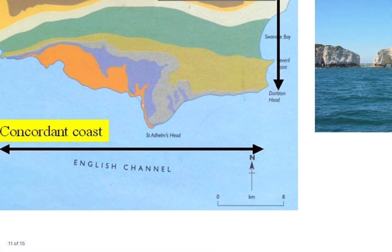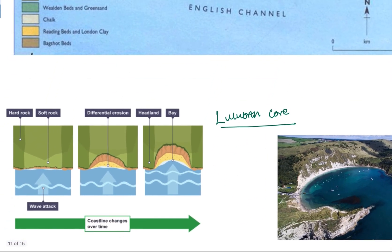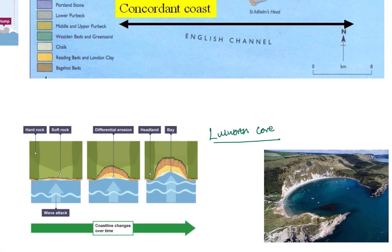We can then start to move further back down the coast and look at the other processes and landforms occurring here. Further along the coast we have Lulworth Cove. With Lulworth Cove, it's important to remember that our coastline here is concordant — this means that the rock types lie parallel to the coast. The sea has broken through the narrow strip of hard Portland limestone and has been able to erode the softer Wealden clays behind. They've been able to erode the clays because they're less resistant — they can put up less of a fight to the erosion. This is what's formed that circular bay that we can see in the picture.